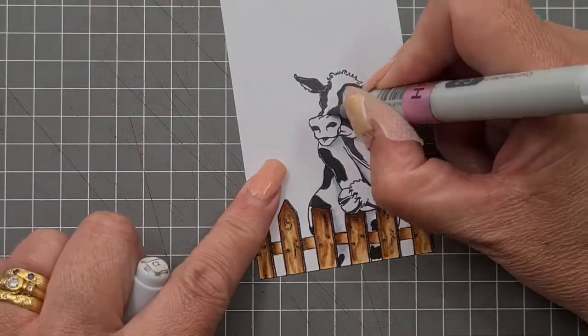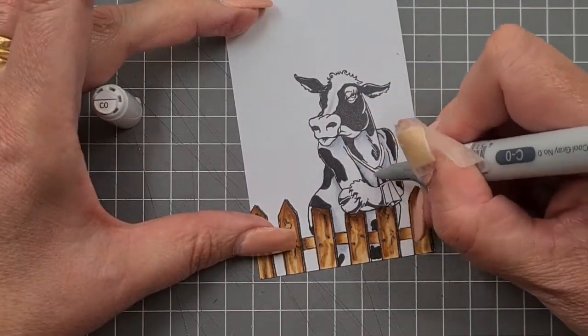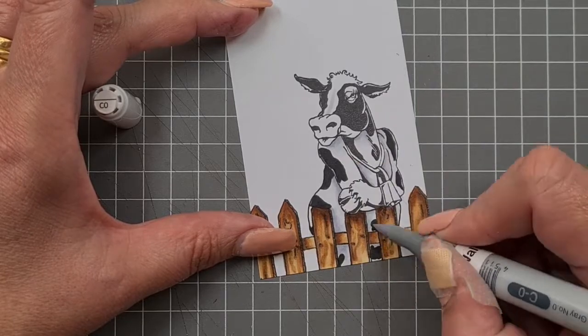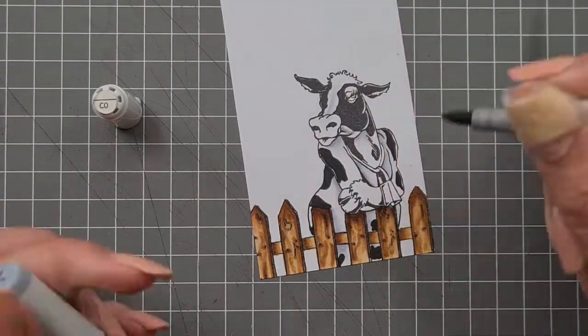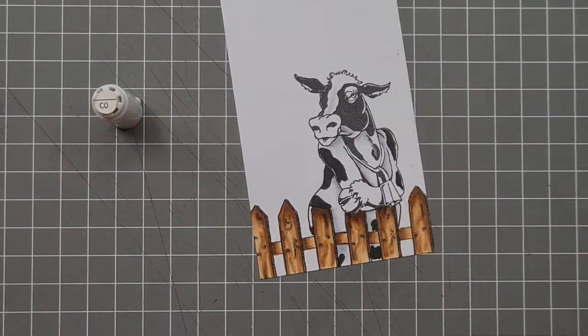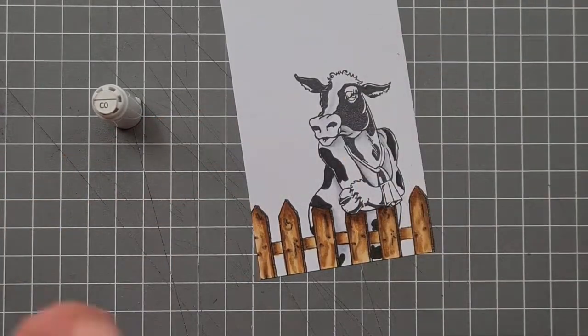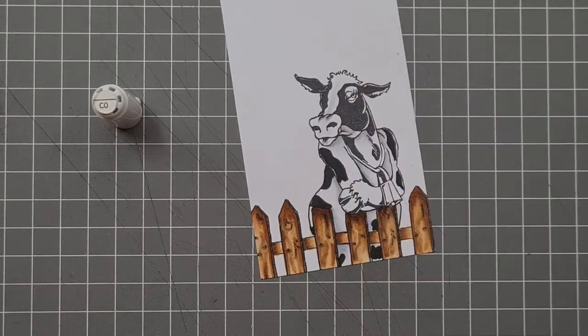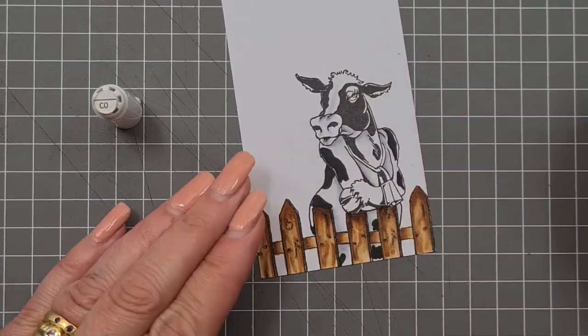All the information will be down below. So we're moving on to Bridget. I have colored in with the black, I think it was the C9 actually, over her spots.